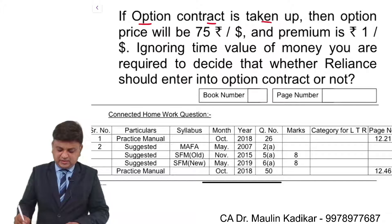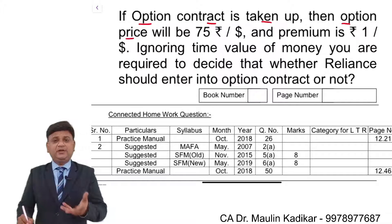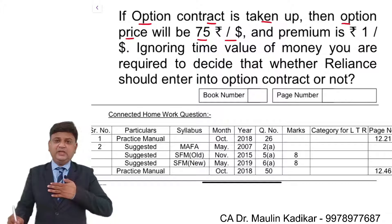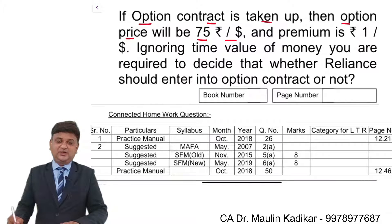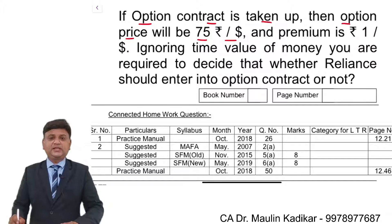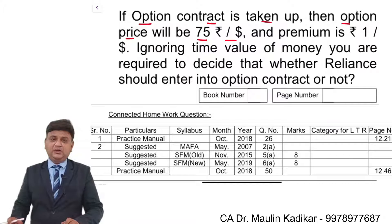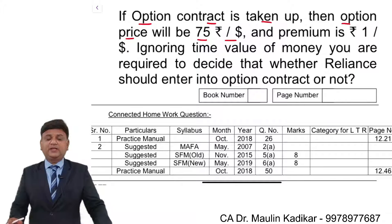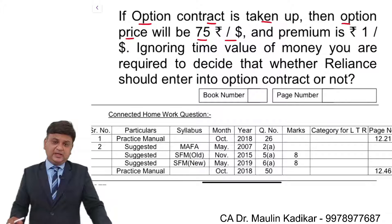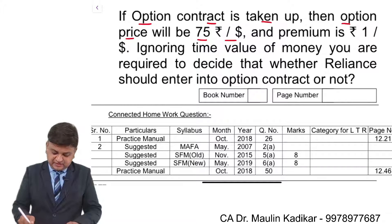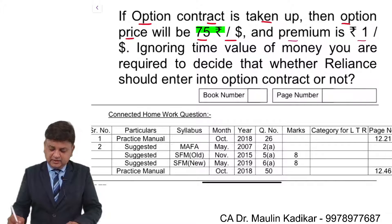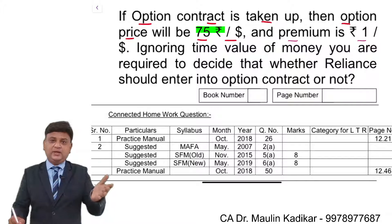If an option contract is entered upon, the exercise price is 75 rupees per dollar, wherein you have the right of conversion but not the obligation. In a forward contract, you are committed to convert at a pre-determined rate, and if the spot market is better, you cannot take advantage of it. However, in the option market, you have only the right and not the obligation to convert dollars at the exercise price of 75 rupees. The premium is rupee 1, which you pay to buy this right.